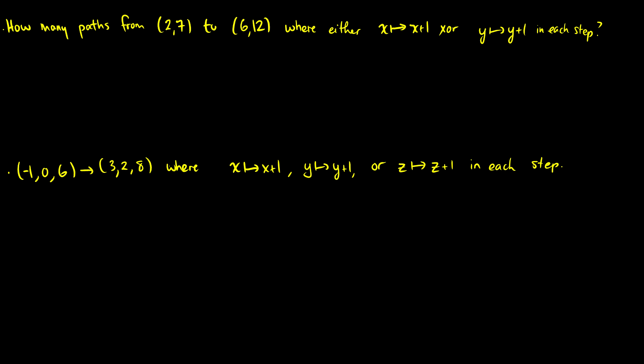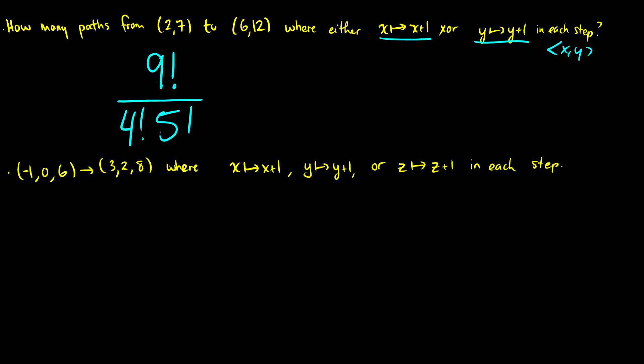Second question, we're going to look at pathing questions. How many paths from (2,7) to (6,12) where we can either move right one or up one? So how many spaces are we moving total? We're moving four to the right and five up. So we're going to have 9 factorial total choices, four of them to the right and five to the north. This is 9 factorial over 4 factorial times 5 factorial.